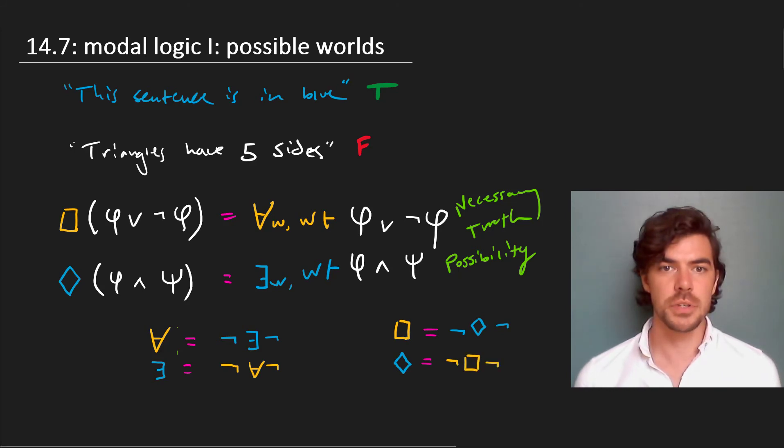If we go back to this example here, triangles have five sides, we can represent this with a new sentence letter. We want to say it's necessarily not the case—that is, it's impossible. But by these equivalences down here, plus our double negation, we can derive that it's not possible that triangles have five sides.